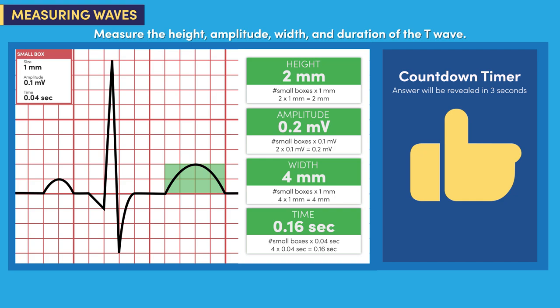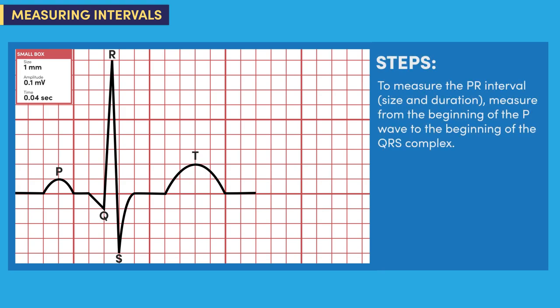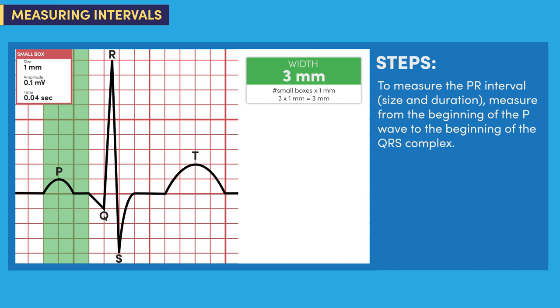You should now have a good grasp on how to measure the individual waves. We'll move on to measuring a couple of intervals and finish the lesson with the QRS complex. An interval includes at least one wave plus, in most instances, the connecting straight line. To measure the PR interval, measure from the beginning of the P wave to the beginning of the QRS complex. The width of the PR interval is three millimeters and the duration is 0.12 seconds or 120 milliseconds.